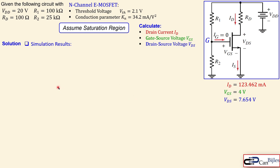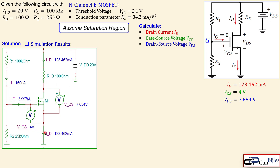Now let's look at the simulation results to verify our calculations. This is the circuit drawn in the TINA-TI SPICE simulator using its simplified MOSFET symbol. In this symbol, the arrow indicates the source terminal: if the arrow points outward from the vertical bar, it is an N-channel device; if it points inward, it is a P-channel device. You get used to this convention when working with circuits.